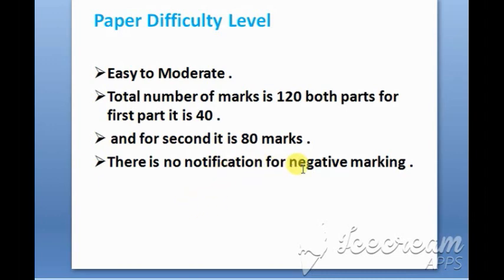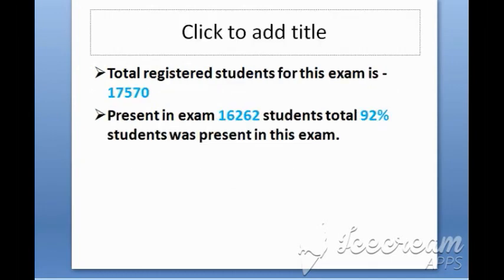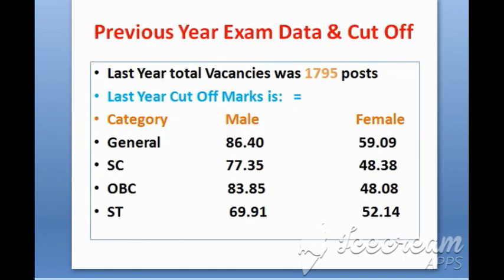In this paper, there was no negative marking. There were 17,570 people registered, and 92% of people were present — very few people were absent. The last paper had 17,000 posts.